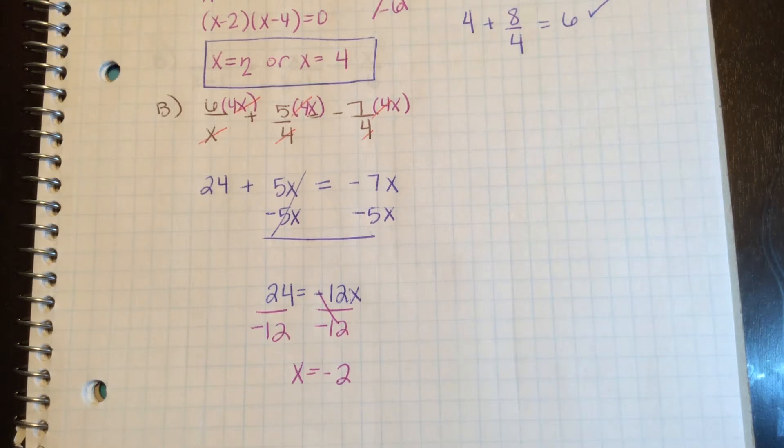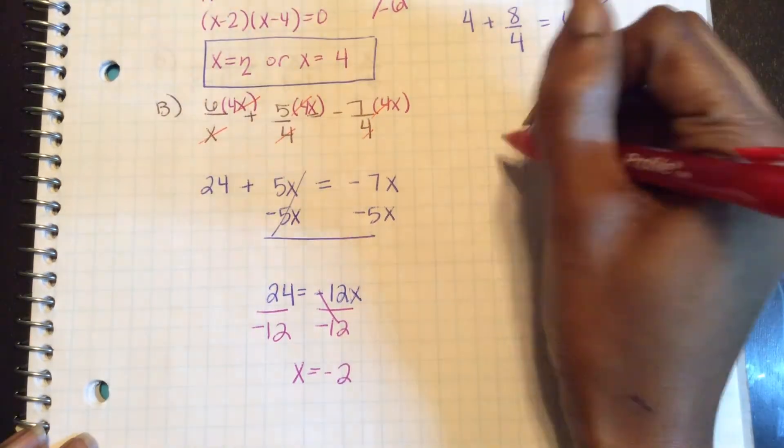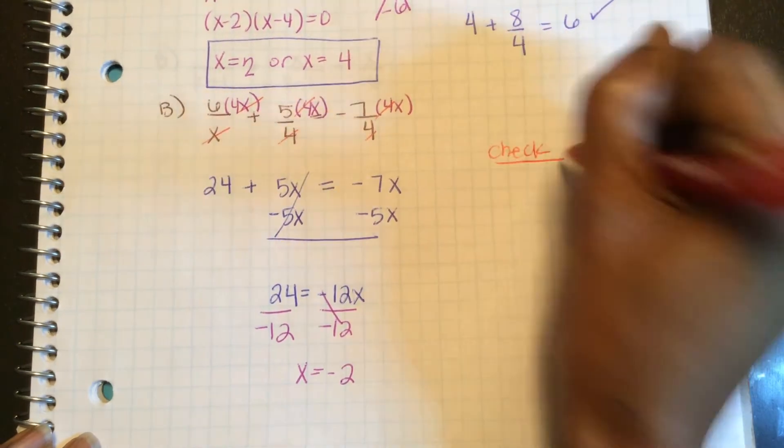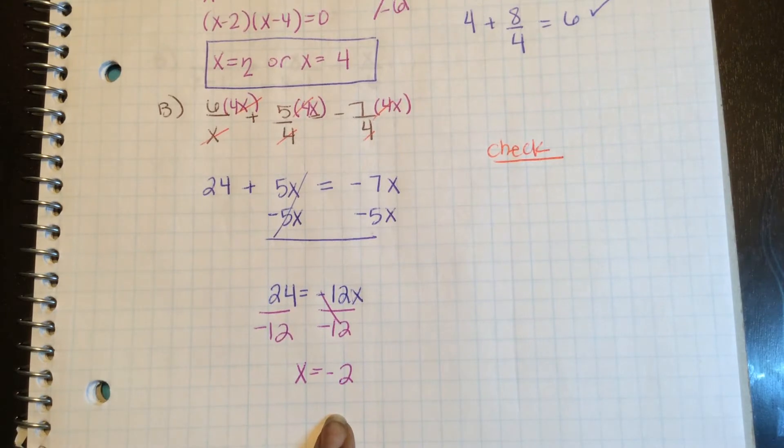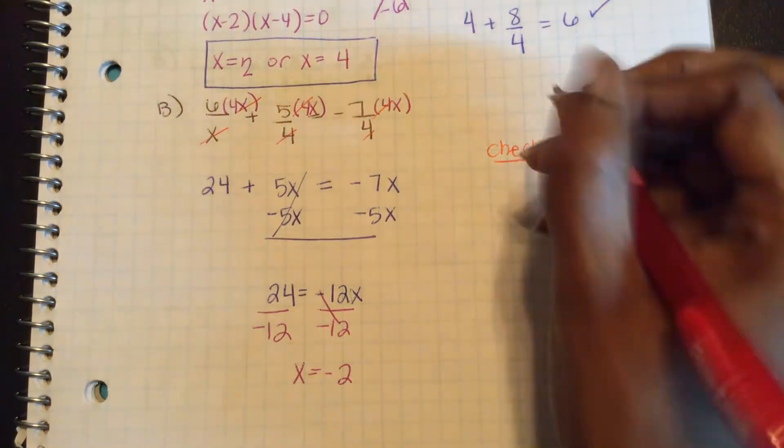Hey guys, sorry about that. My camera shut off. Now that we've seen that x equals negative 2, we need to check for extraneous solutions. I need to plug this back into my original equation to see if it's true.